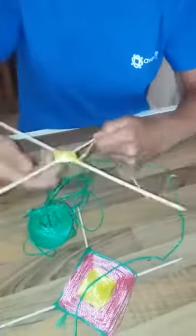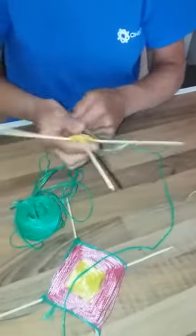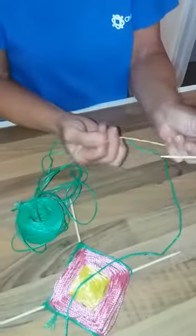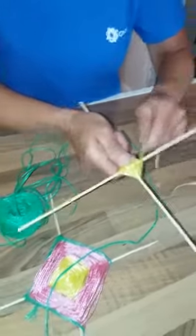You continue to do that until you've done as much yellow as you like. Then what you do is add another color, tie it onto there, keep continuing going around and eventually it will come out like that.